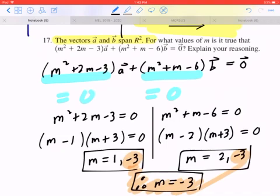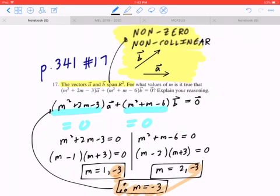To double check this, plug it back in. If you plug in negative 3 in the first bracket, that gives you 0 times a, plus if you plug in negative 3 in the second bracket, that gives you 0 times b, and 0 plus 0 equals the right-hand side. That's how you do it. I hope this makes sense.